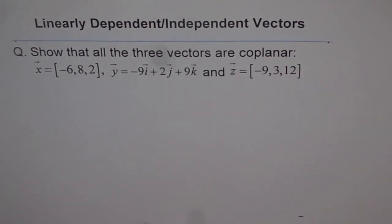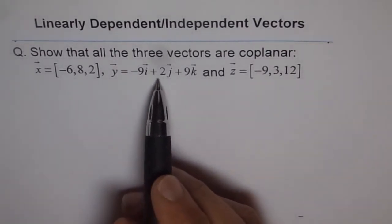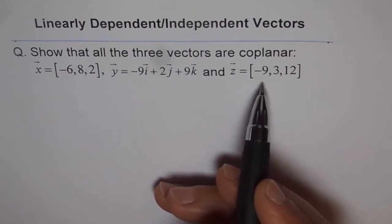And you need to show that they are coplanar. Now these vectors are coplanar if we can write one vector in terms of other two, then they are coplanar.